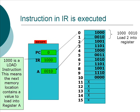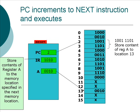You can see on the right a little explanation that just says 'load 2 into register A.' So now the PC or program counter increments to the next instruction, which is in memory location number 2.